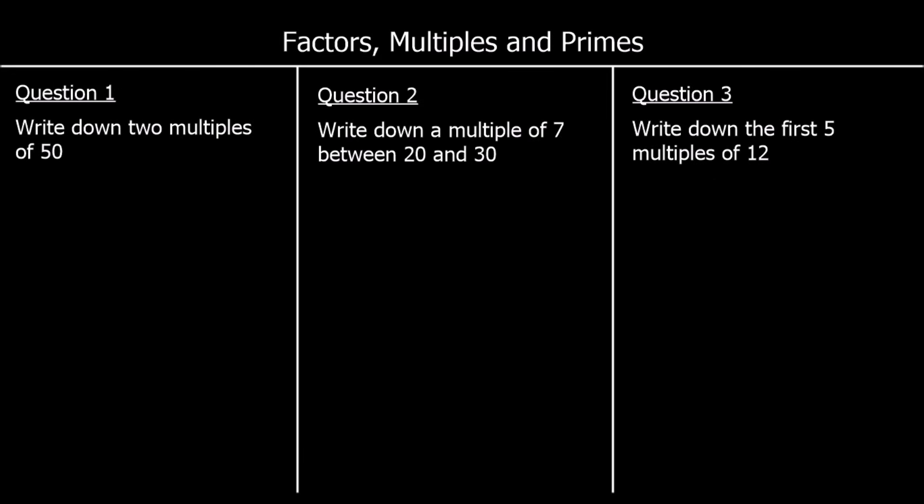Okay, 3 questions. Pause the video and press play when you're ready for the answers. Question 1: write down any 2 multiples of 50 — any numbers in the 50 times table. I'll just write down the first two: 1 times 50 is 50, and 2 fifties are 100. You could also have 150, 200, 250, and so on.